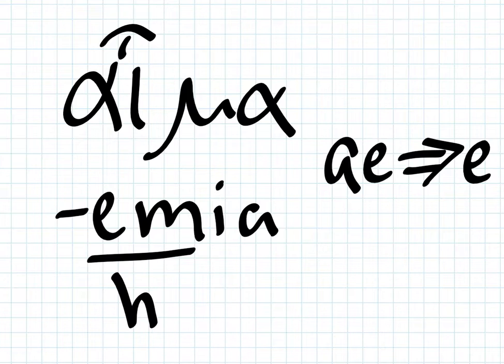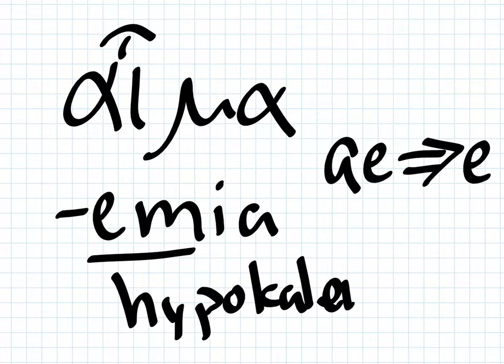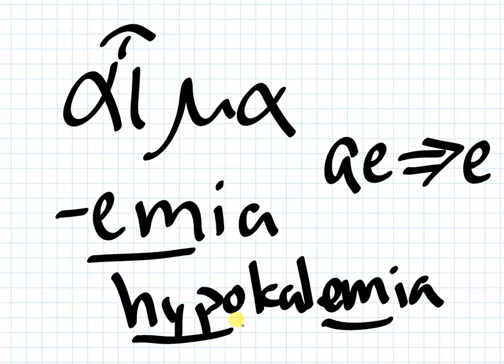So hypokalemia. This is actually a word with tons of interesting etymologies. We're just going to talk about the eemia. So low potassium in the blood. And the kal is something that we could spend a couple of videos talking about that etymology. But we're just going to get that. Hypokalemia. Low potassium in the blood. Essentially.